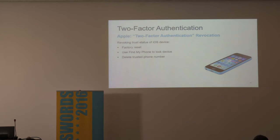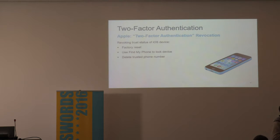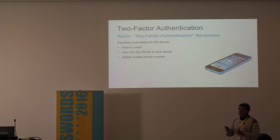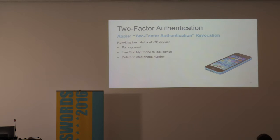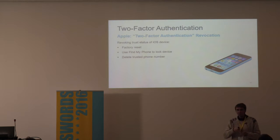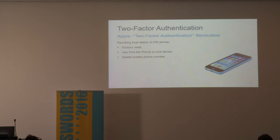Revoking trusted status from iOS devices is pretty easy. Each iOS device is individually revocable. You can do a factory reset, use Find My Phone to lock the device — after which it will no longer receive push notifications — remove the device from your Apple ID account online, remove it from iCloud, or block iCloud services from the device itself so it no longer receives notifications through the iCloud protocol. You can also remove a trusted phone number — you must add one, but you can remove it later in settings.